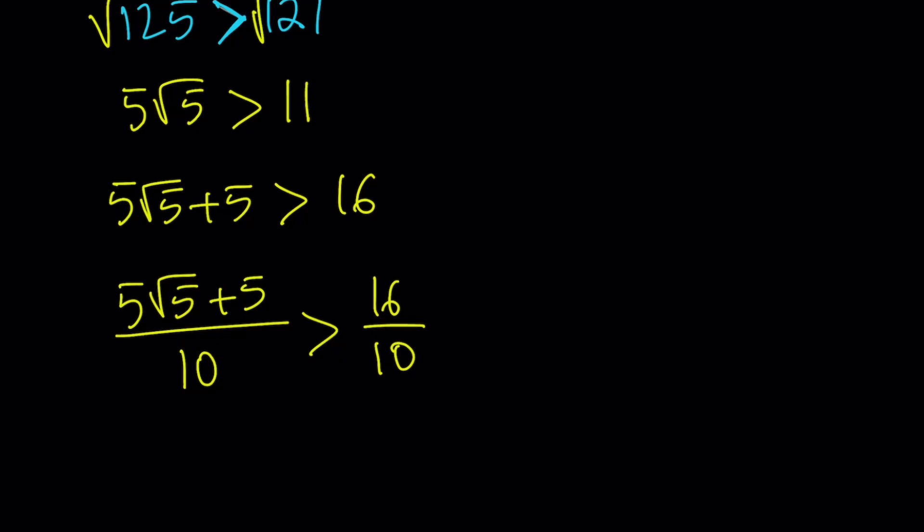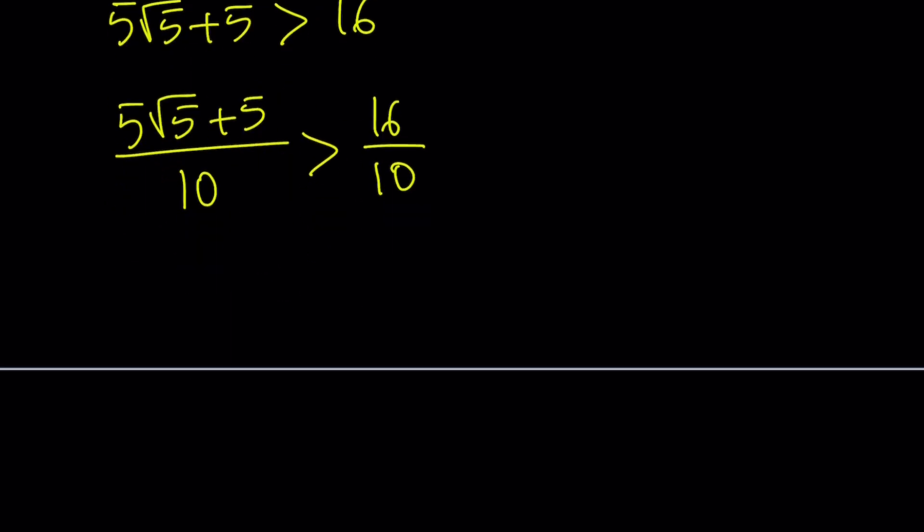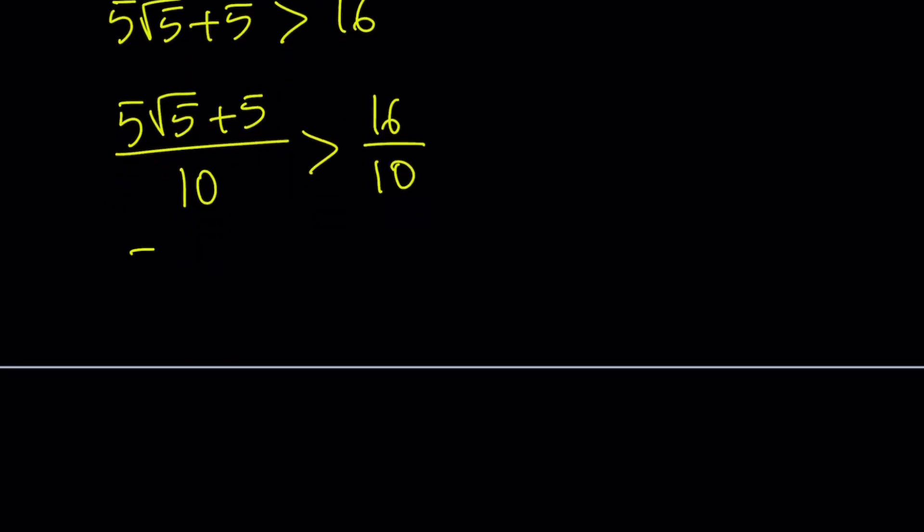And obviously that's not a coincidence. This is what happens when you come up with a comparison problem and then just work it backwards. Make sense? Hopefully it does. Now, let's factor out a 5 here. 5((√5+1)/2) > 16/10. By the way, you could write 16/10 as 8/5. It wouldn't hurt, right?